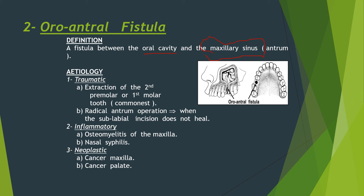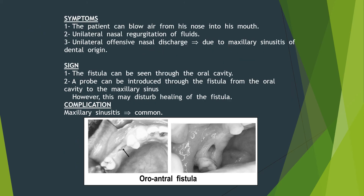It can be inflammatory due to osteomyelitis of the maxilla or nasal syphilis, or due to neoplasia like cancer of the maxilla or cancer of the palate. Symptoms: the patient can blow air from the nose into the mouth, unilateral nasal regurgitation of fluids, and unilateral offensive nasal discharge due to maxillary sinusitis of dental origin. Signs: the fistula can be seen through the oral cavity; a probe can be introduced through the fistula, though this may disturb healing. The complication is maxillary sinusitis.